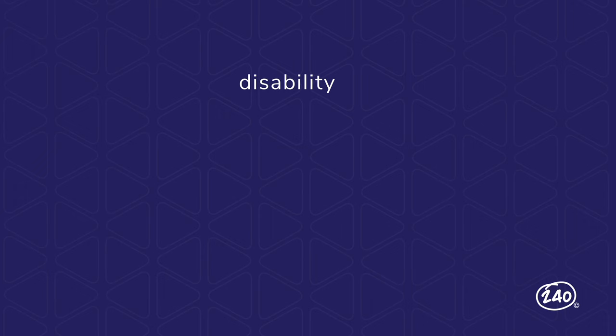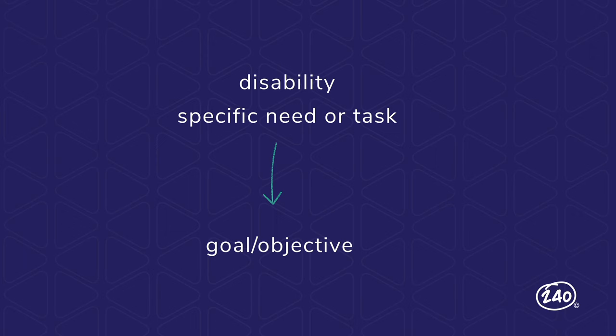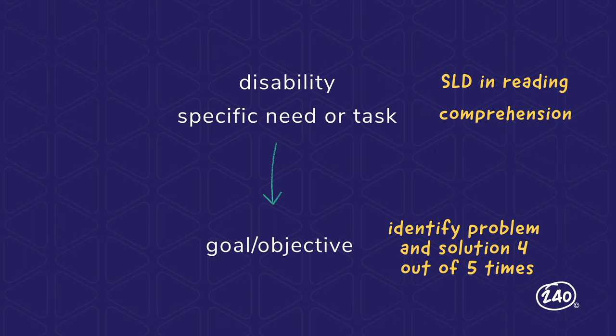In the Using Assessment Results portion, you'll need to determine next steps for students based on their assessment results. One type of question that comes up a lot requires choosing the best goal or objective for a student based on assessments of their knowledge and skills. Think about the student's disability along with the specific need they have or task they're trying to accomplish. For example, an appropriate objective for a student with a specific learning disability in reading with a weakness in comprehension would be to identify the problem and solution of a grade-level fiction text four out of five times.